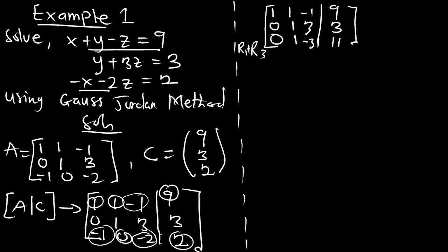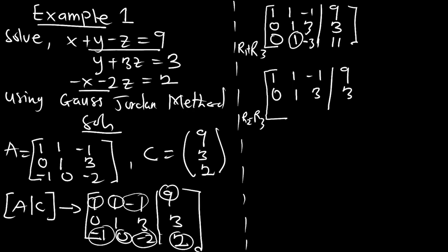I still want to change some elements to 0. Let me change this 1 in row 3 to 0 as well. Still on row 3, I'm going to apply R2 - R3 on row 3. Row 1 is the same: 1, 1, -1 | 9. Row 2 is the same: 0, 1, 3 | 3. For row 3, that is R2 - R3: 0 - 0 = 0; 1 - 1 = 0; 3 - (-3) = 6; 3 - 11 = -8.